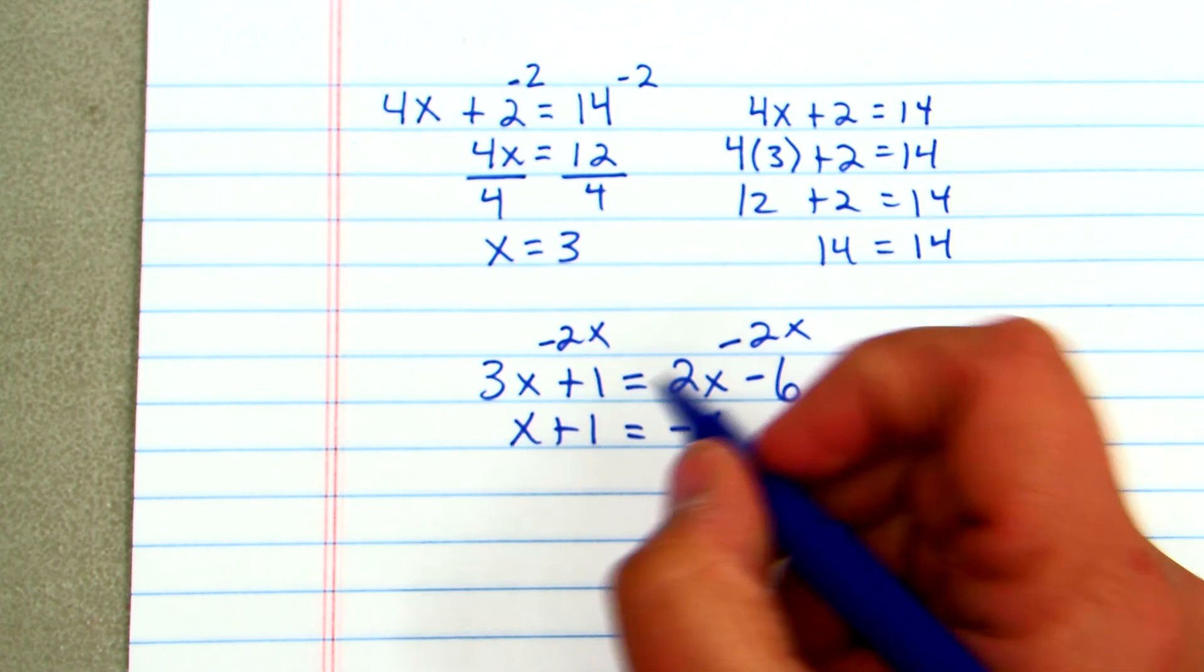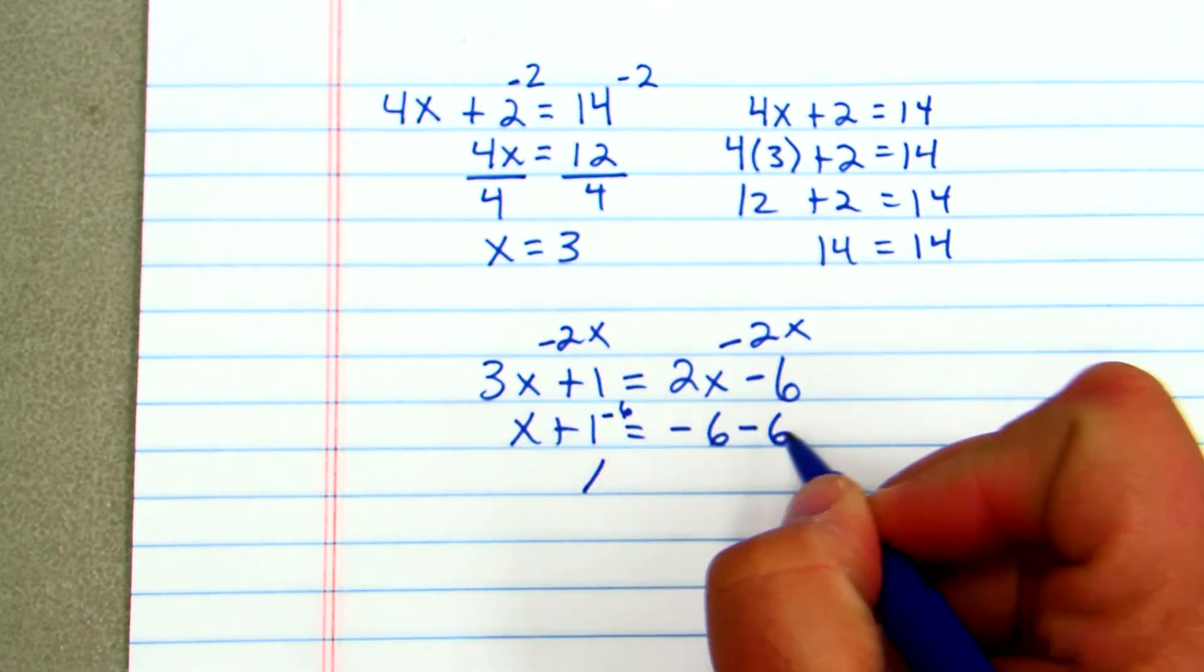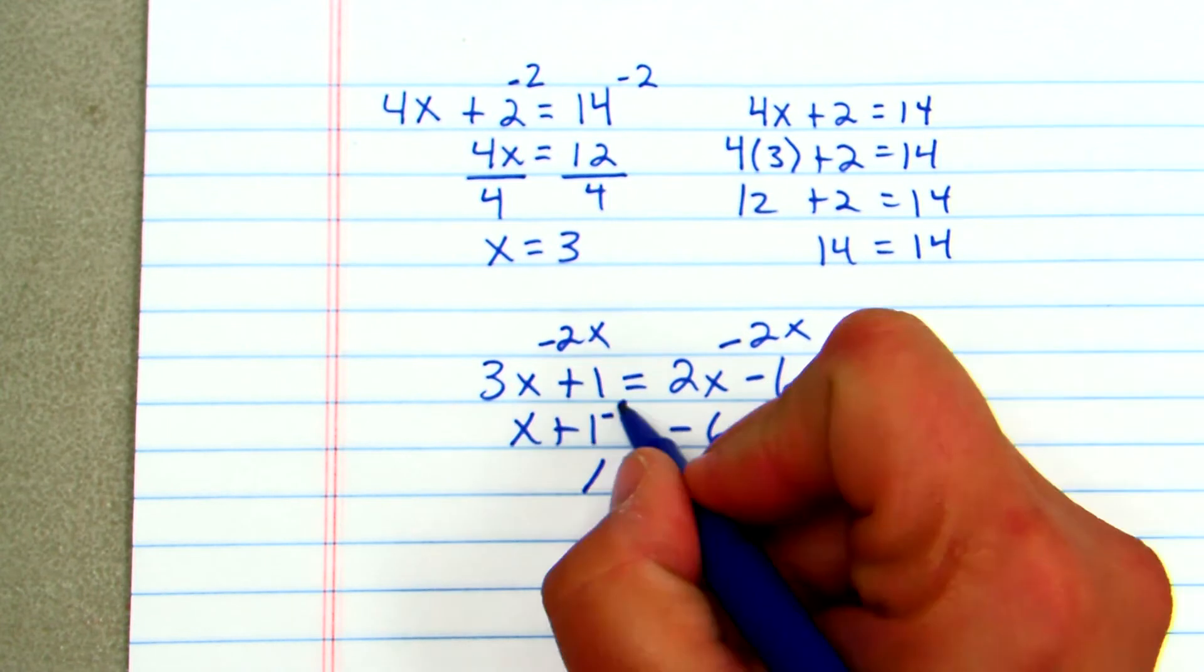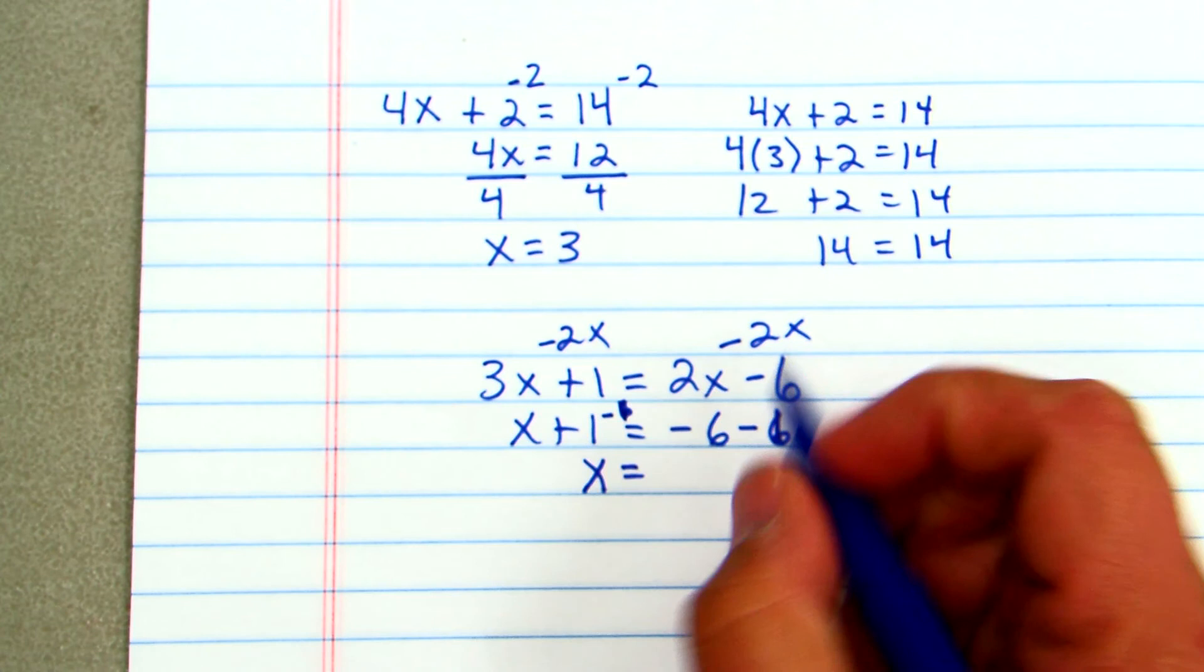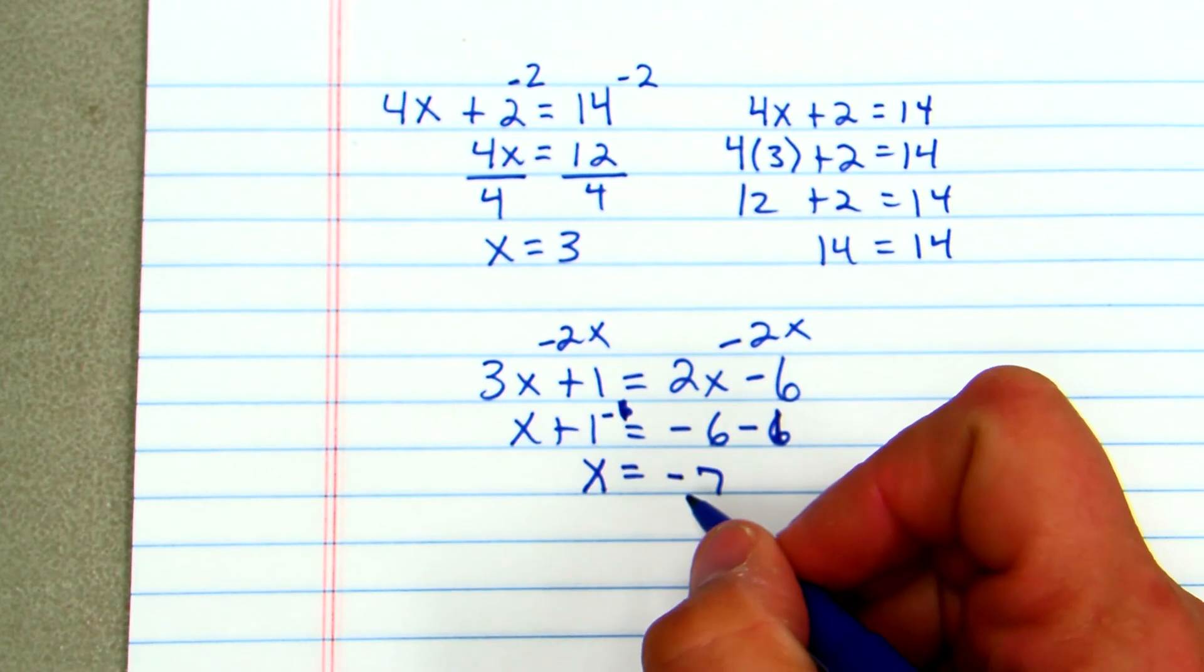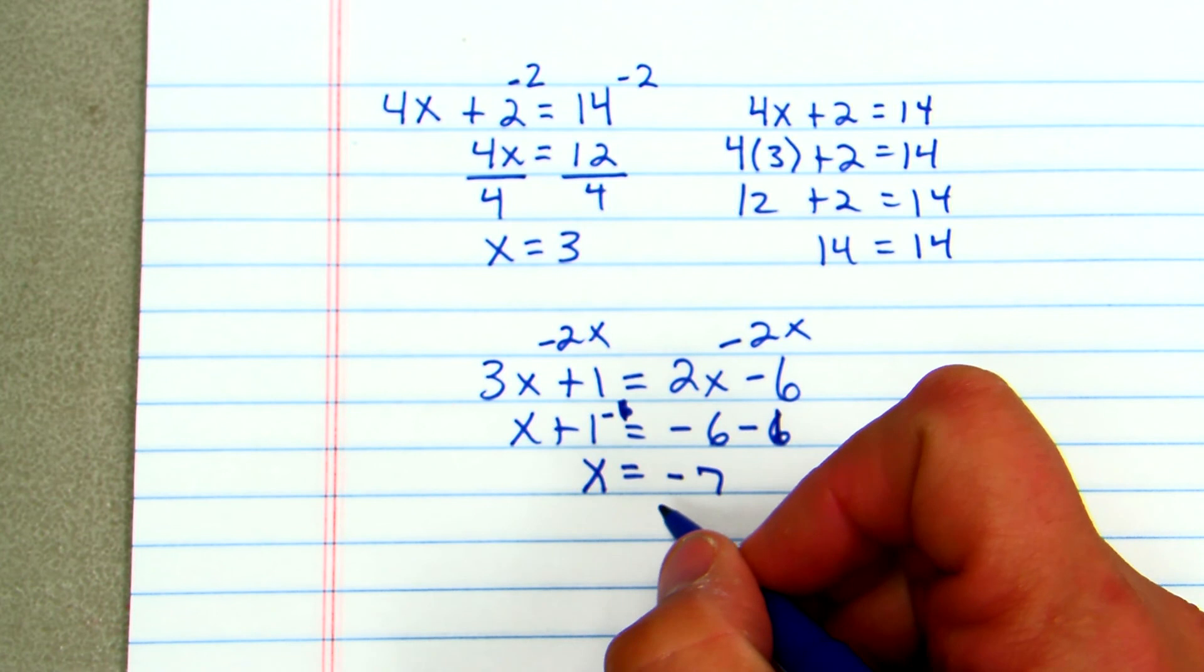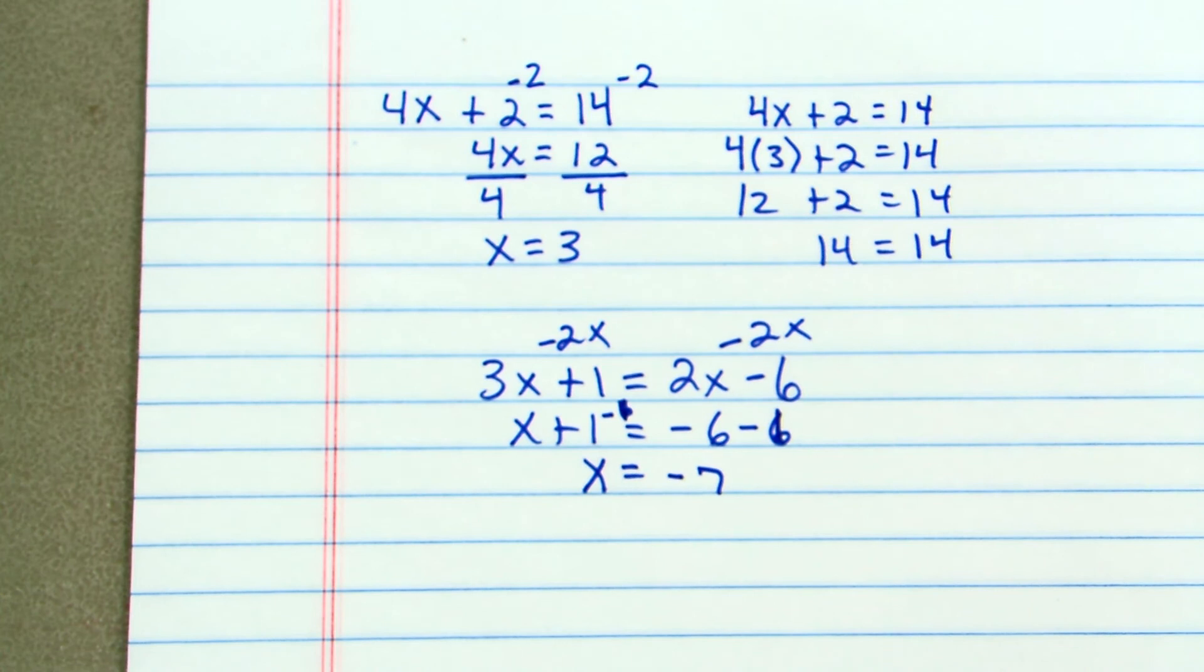Then I will subtract 1 from both sides, and that will leave me with x equals negative 7. So now I can also go in and check that, and I strongly suggest on most of these problems that you check them. I'm not going to go through and check each and every one, but you can.